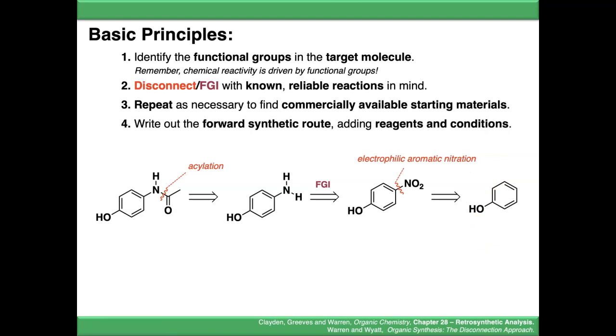We then write out the forward synthetic route. We add reagents and conditions. Remember, we start from the starting materials and end up at the target molecule now. Starting with phenol, we can treat that with nitric acid and sulfuric acid to nitrate it.